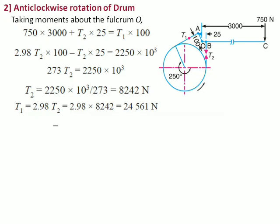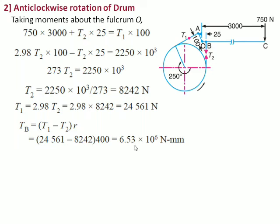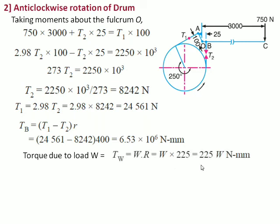Now let us find out the braking torque. Braking torque TB equal to T1 minus T2 multiplied by R. Substituting the value of T1 and T2 in this equation, we get value of TB equal to 6.53 into 10 raised to 6 newton-mm.